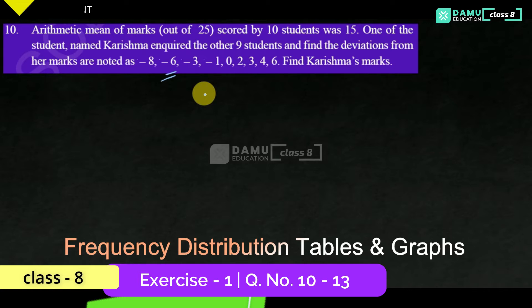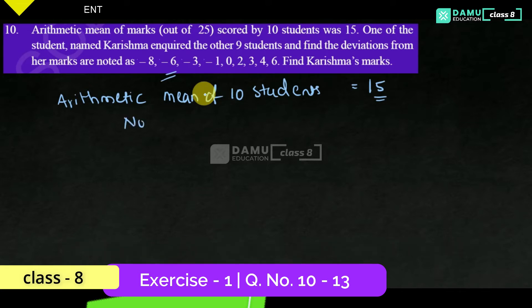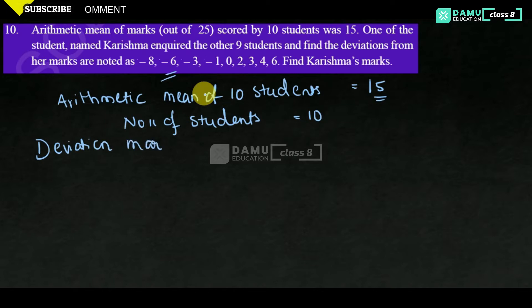The arithmetic mean of 10 students is given as 15. The number of students is equal to 10. We don't know the actual marks — these are the deviated marks, that is, the deviation marks of 10 students.